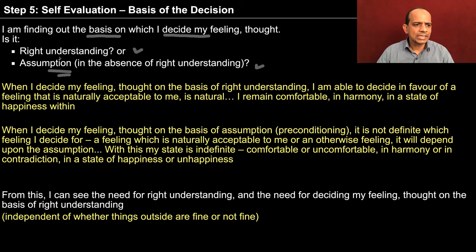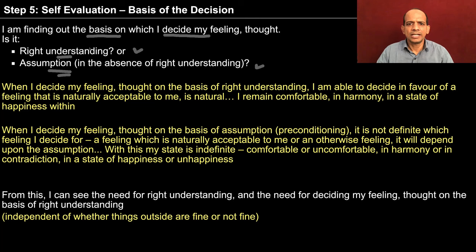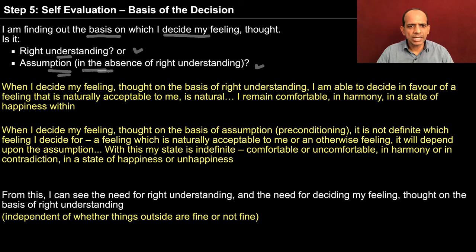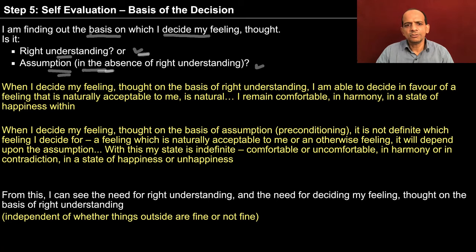If you are able to see that intention-wise the other person is sound — he doesn't want to make me unhappy, rather he is himself unhappy, perturbed, disturbed, anxious — and because of that he is using some kind of language which is not acceptable to me naturally. So this is your right understanding. In the first case you assume the other person wanted to make you unhappy and then you became unhappy. In the second case you are able to see that this person has sound intention, only the competence is lacking, and then you remain happy.